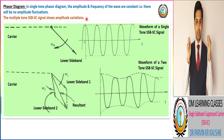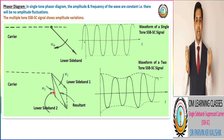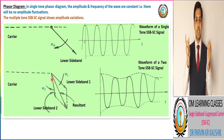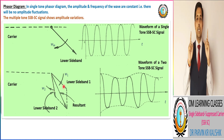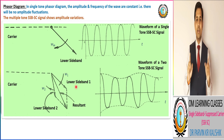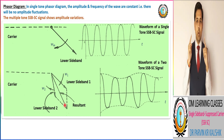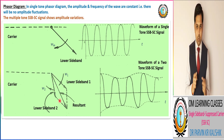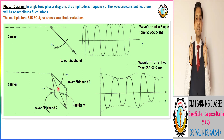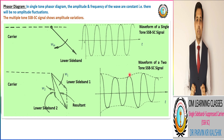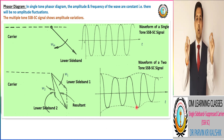To represent amplitude variation in the phasor diagram, we consider a two-tone LSB SSB-SC signal. The first lower sideband operates at angular frequency ω₁, and the second lower sideband operates at angular frequency ω₂. By combining both lower sideband vectors (LSB1 and LSB2), we get the resultant vector sum. As per the resulting waveform, amplitude variation is also observed in the SSB-SC signal.